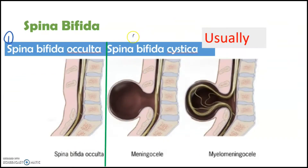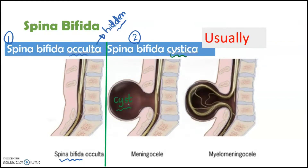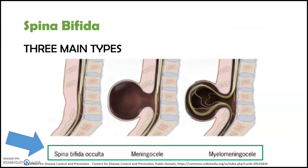There are two types of spina bifida: spina bifida occulta and spina bifida cystica. Occulta is Latin for hidden. Spina bifida occulta is the mildest form of spina bifida. In spina bifida cystica, a cyst including spinal fluid protrudes from between the vertebrae. It is further divided into meningocele and myelomeningocele according to the components in the cyst. Usually when people say spina bifida, they mean myelomeningocele, which is the most severe type. So these are the three main types of spina bifida.